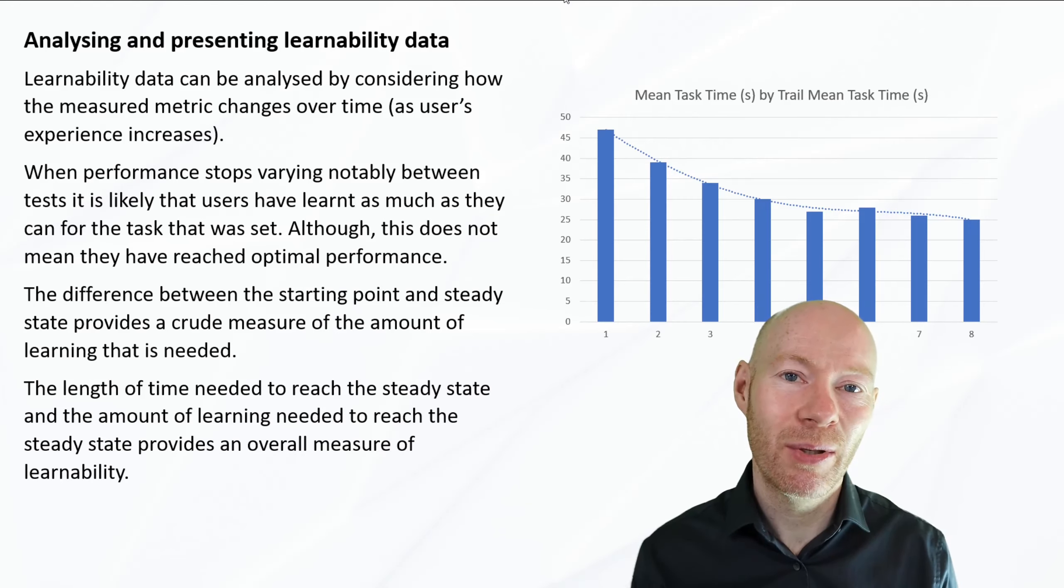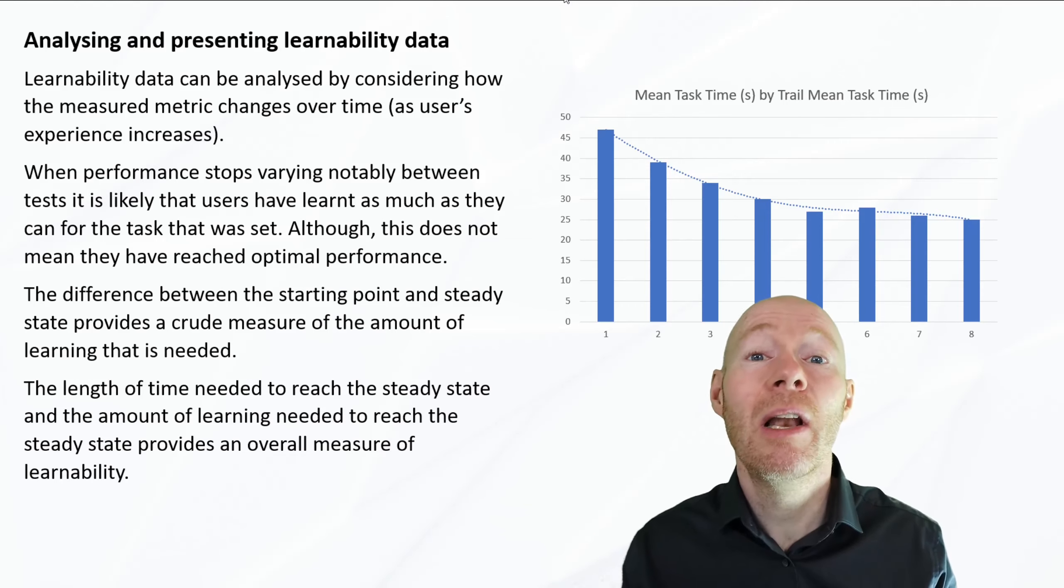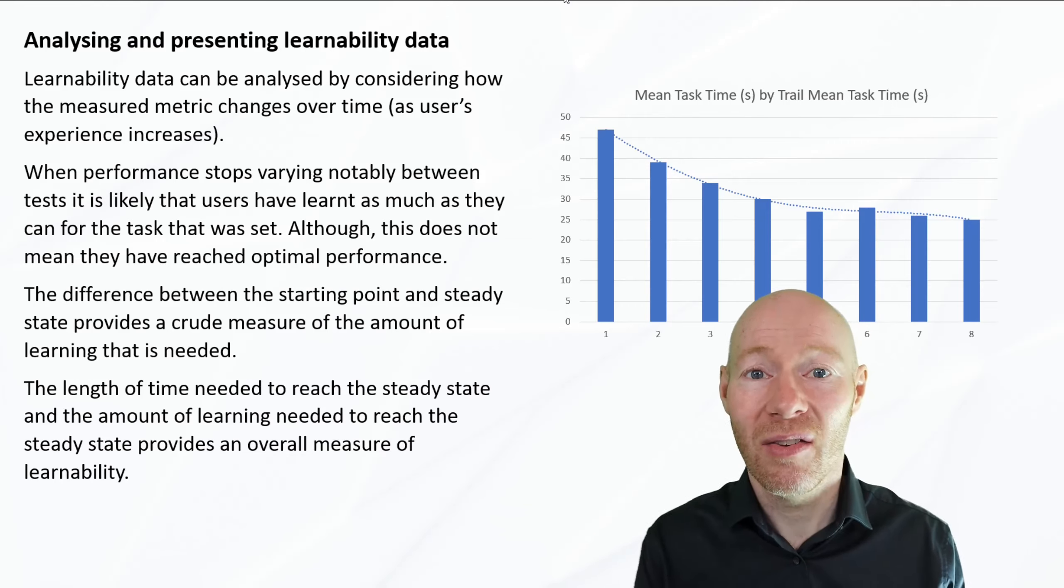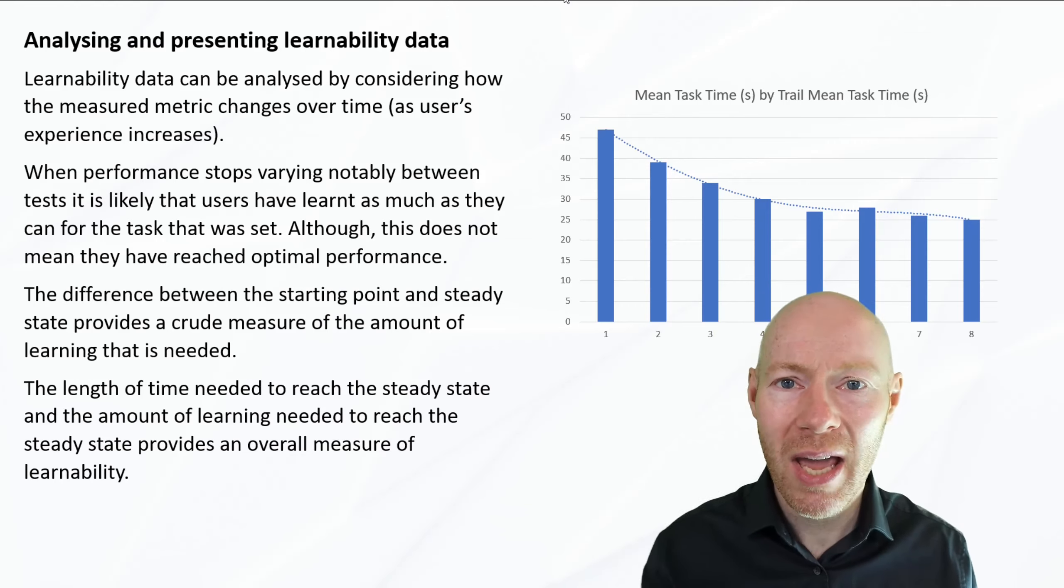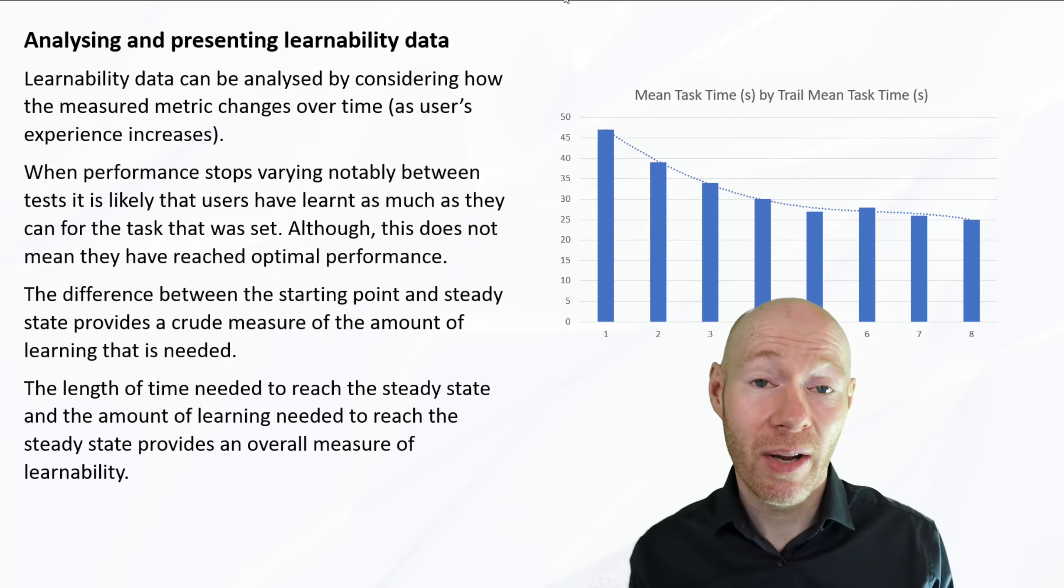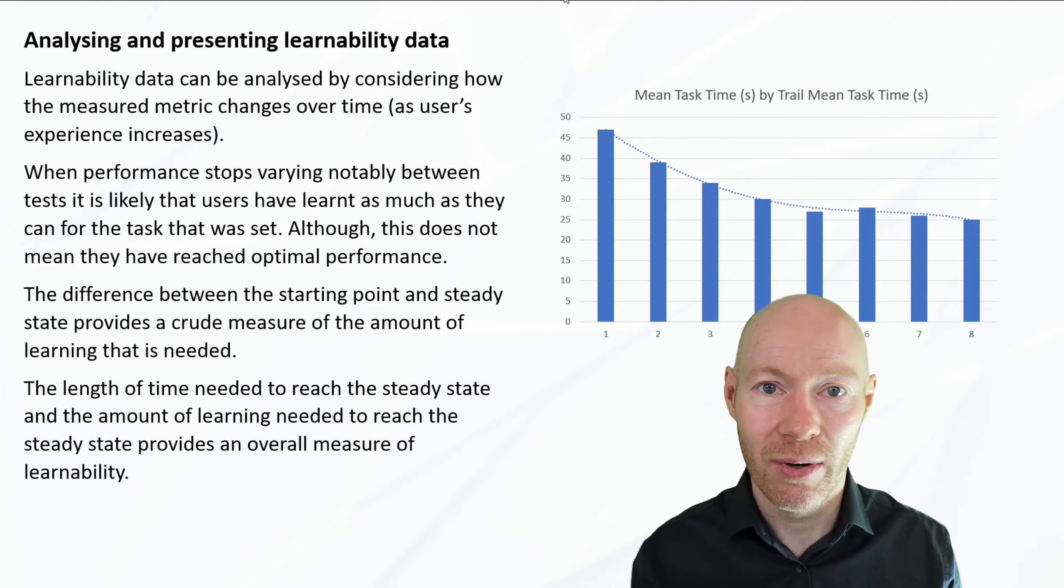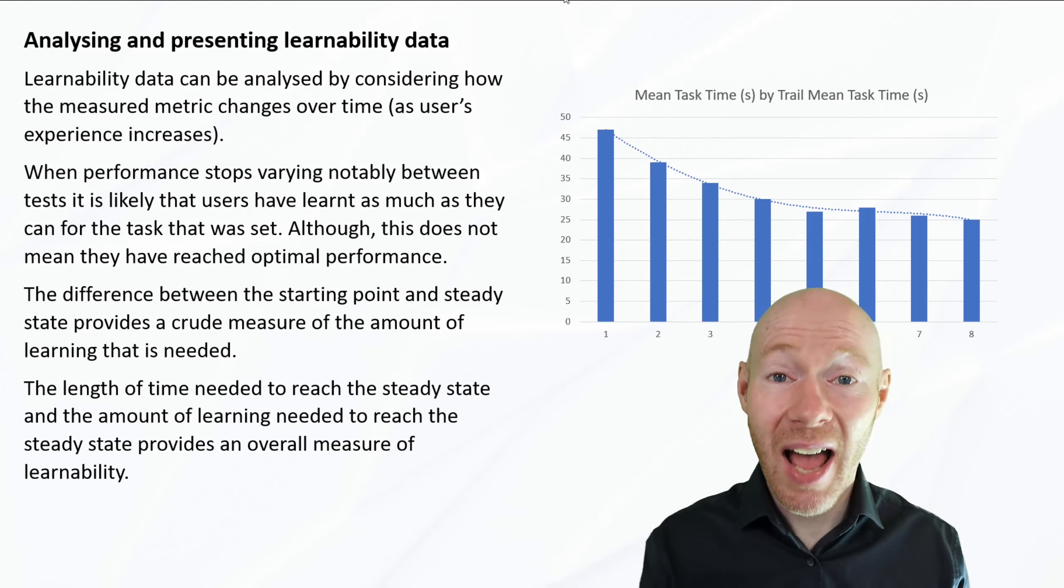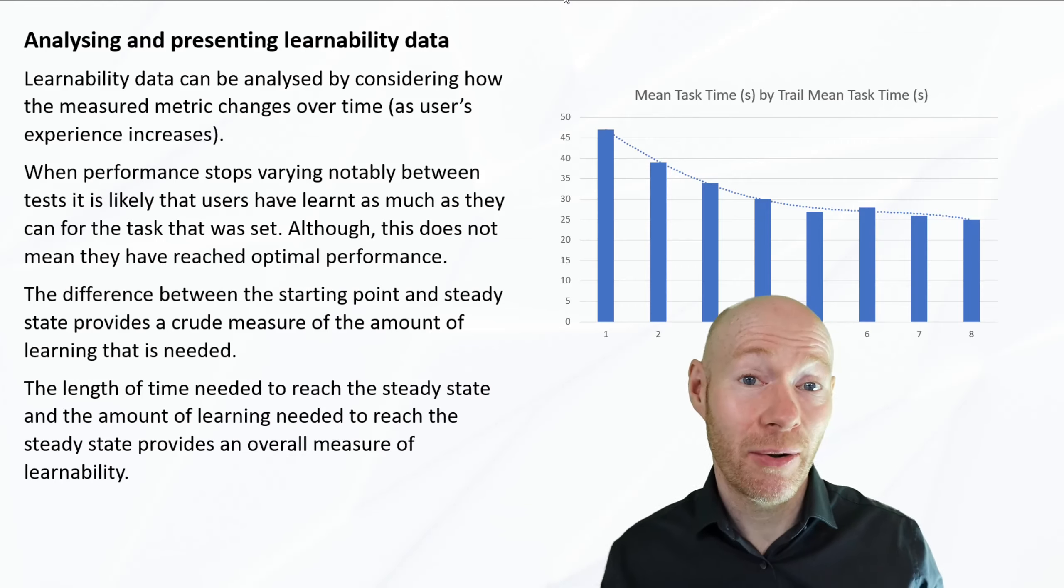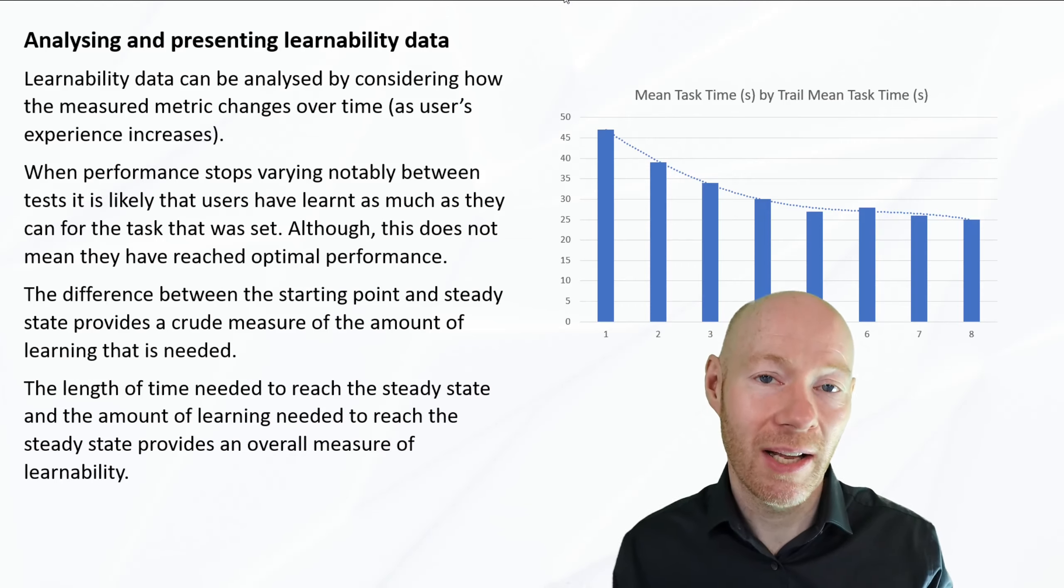The difference between the starting measure of efficiency and the finishing, that delta from start to end gives us a crude understanding of the amount of learning that needed to happen. It is crude because we're assuming that changes in efficiency directly relate to the volume or amount of learning, but it's an okay proxy. Certainly if we're comparing across multiple tasks, we may find that in some tasks there's a very significant increase in efficiency. And the length of time it takes to go from an initial level down to the steady state also gives us an indication of how long that learning happens over.